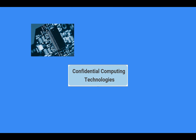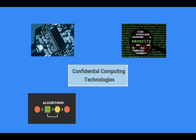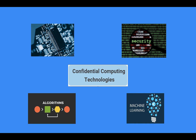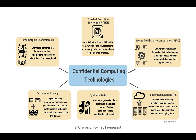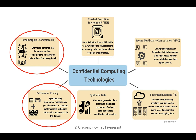The field of confidential computing encompasses hardware, cryptography, algorithms, and machine learning. Real-world examples include differential privacy, homomorphic encryption, federated learning, and more.